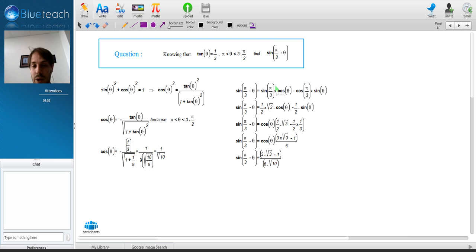Since we know sine pi divided by 3 and cosine pi divided by 3, we have two unknowns: cosine theta and sine theta.